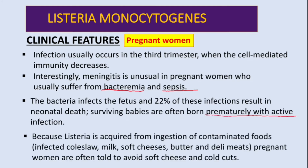Because listeria is acquired from ingestion of contaminated foods like infected coleslaw, milk, soft cheese, butter, and deli meats, pregnant women are often told to avoid soft cheese and cold deli items, because this bacteria thrives at low temperatures.